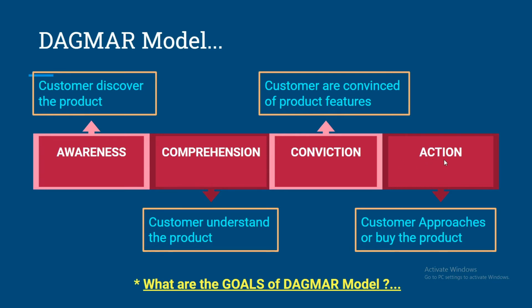In the last stage — Action — the customer buys the product. But in the worst-case scenario, the customer approaches the purchase but does not actually buy it. So we need to track the consumer until the end, even after successfully passing through the first three stages, because there is still a possibility that the sale does not happen.